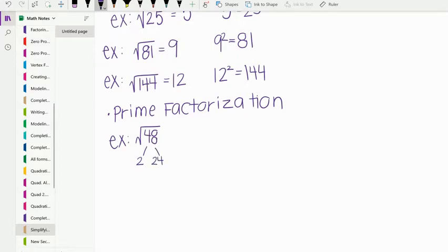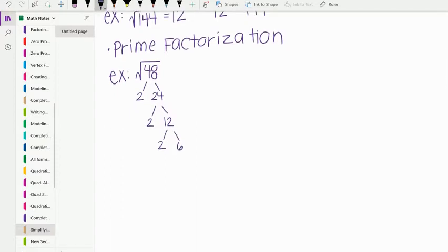2 is prime, so I could leave it alone. Then I branch 24: 2 times 12. 2 is prime, so I leave it alone. 2 times 6, 2 is prime, but 6 is not. Then 2 times 3. So I end up with 2 and 3, which are both prime numbers. Remember, a prime number is a number whose factors are itself and 1. Then we look for pairs. I have a pair of 2s, a pair of 2s, and a lonely 3. We take the pair of 2s times the other pair of 2s, and the 3 stays in the radical, so we get 4 root 3.